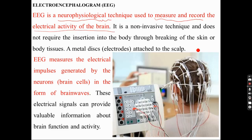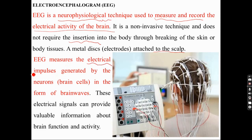The electroencephalogram is a non-invasive technique and does not require insertion into the body through breaking the skin, body tissue, or skull. An electrode — a metal disc — is placed directly on the skull. EEG, short for electroencephalogram, measures the electrical impulses generated by neurons, which are the brain cells, in the form of brain waves.